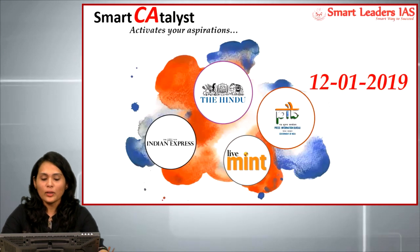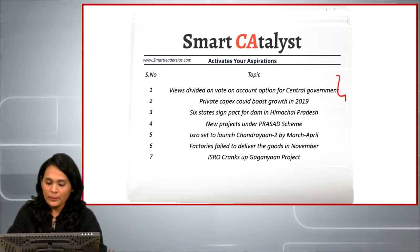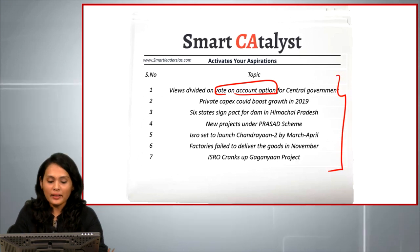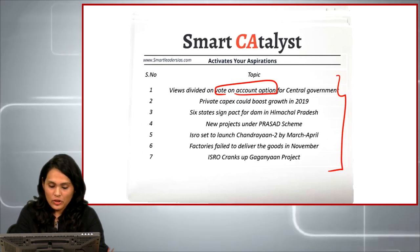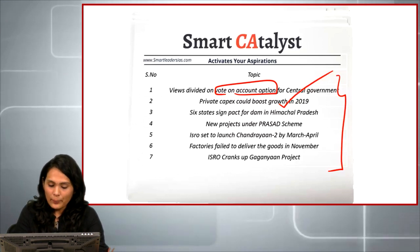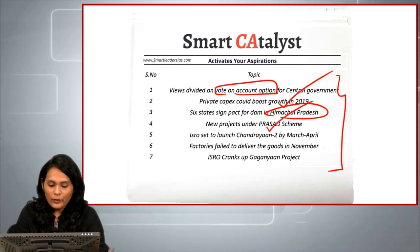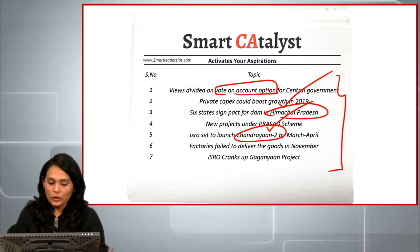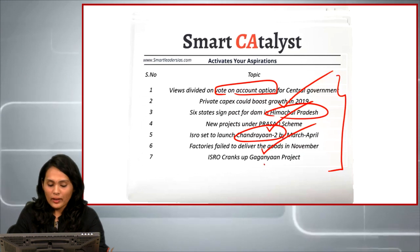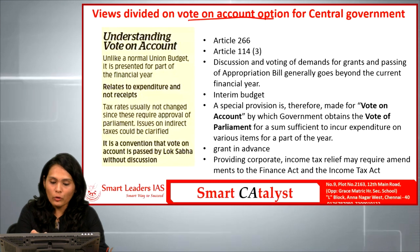Hello friends, welcome to SmartCatList. Today we will be seeing the current affairs of 12 January 2019. The articles we will be seeing for prelims are these seven: first is about vote on account option for the central government, second is about private capital expenditure which could boost growth in 2019, third is about a multi-purpose dam in Himachal Pradesh, fourth is about the PRASAD scheme, fifth is about Chandrayaan-2, sixth is about the Index of Industrial Production data, and the final article is about the Gaganyaan project of ISRO.